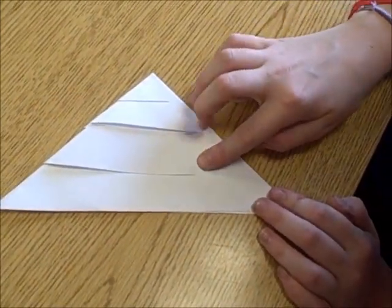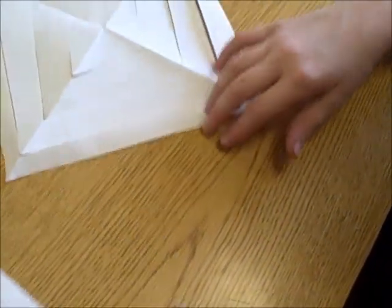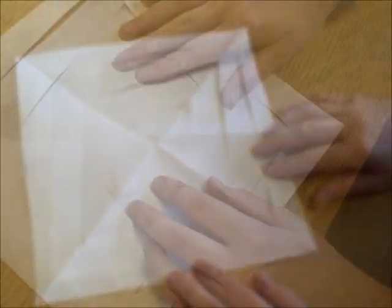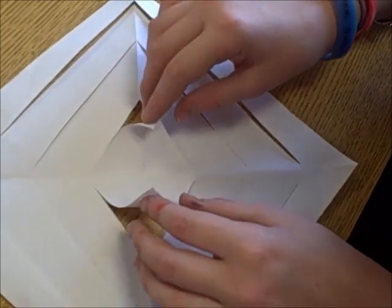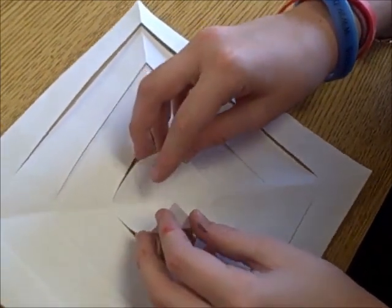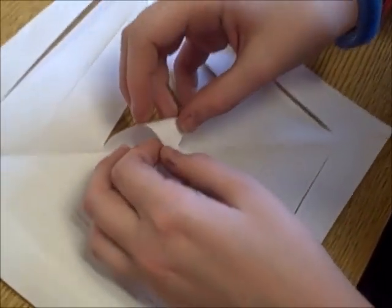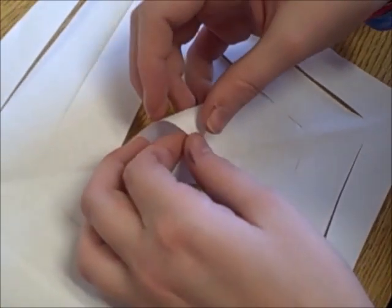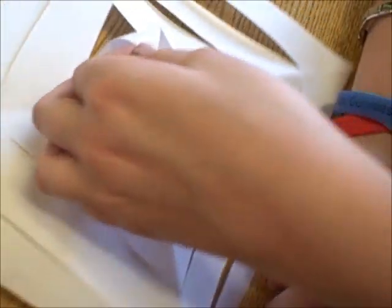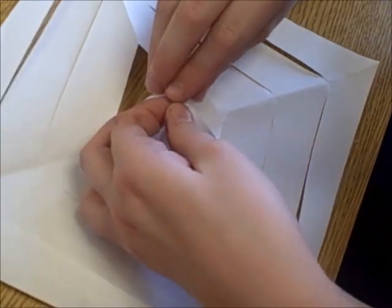Then you take the piece of paper that you cut and open it up so it looks like this. Take the inside cut and roll it over edge to edge, overlapping a little, and take a piece of tape and tape it.